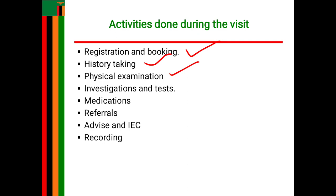You check for any deformities, limping, or stunted growth, as these may indicate cephalopelvic disproportion and a small or altered pelvic diameter. Under general examination you also assess the posture of the woman.